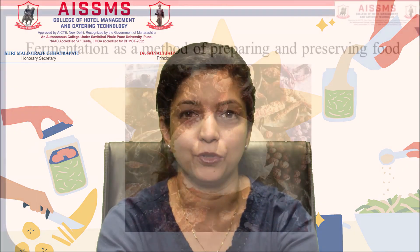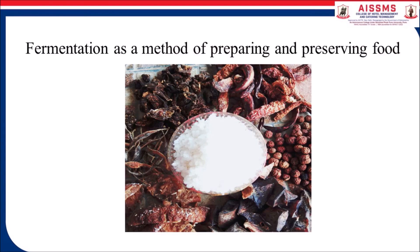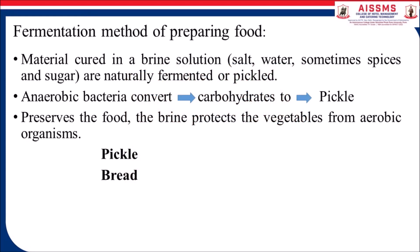Let us see the role of the fermentation method for preparation of food. The first example comprises of material cured in a brine solution. A brine solution comprises of salt, water, and sometimes certain spices and sugar to add flavor. This gets naturally fermented and pickled. An anaerobic bacteria then converts carbohydrates and a pickle is formed, with the role of oxygen defined in the process of fermentation.